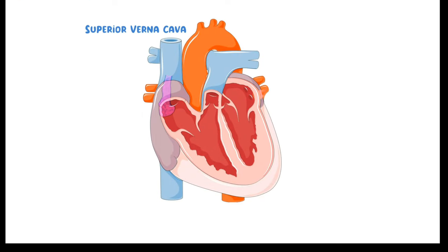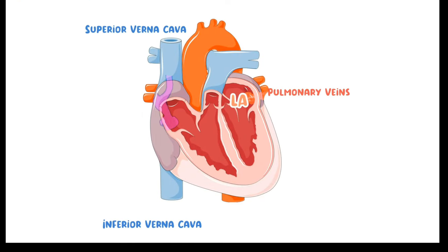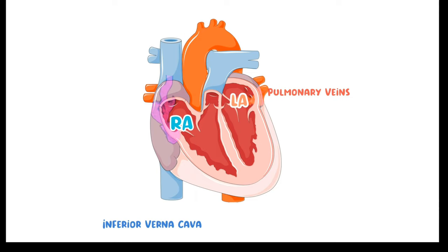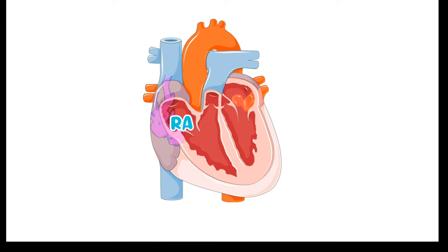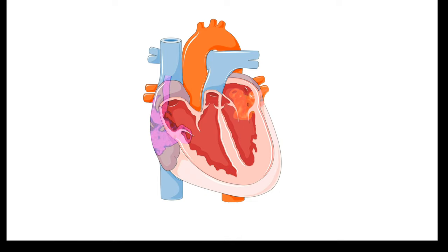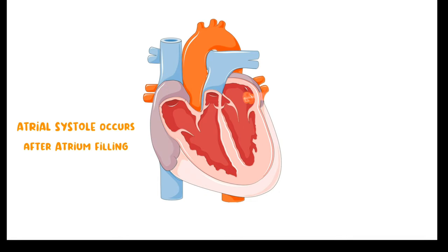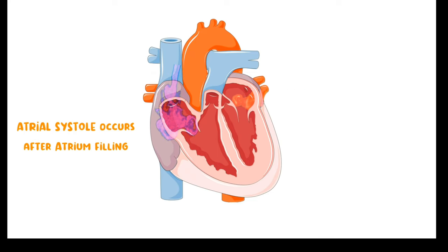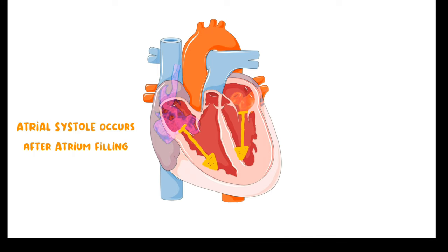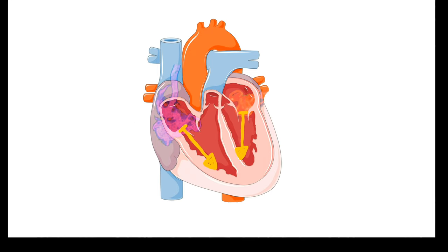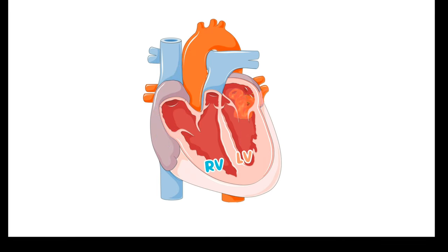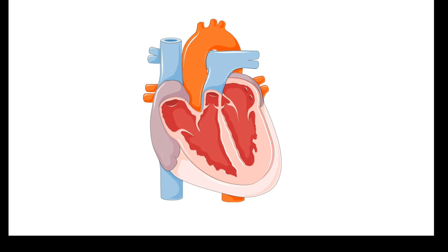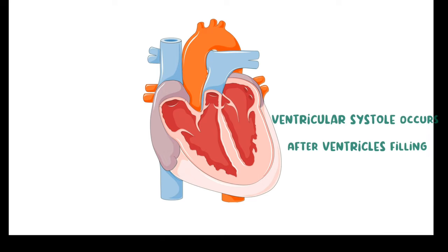Blood comes into the right atrium through the superior vena cava and inferior vena cava. Blood comes into the left atrium through the pulmonary veins. Atrial systole occurs when the atrium is completely filled with blood, and it happens in 0.1 second, pushing blood from the right atrium to the right ventricle and from the left atrium to the left ventricle.